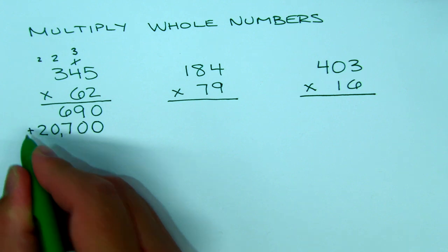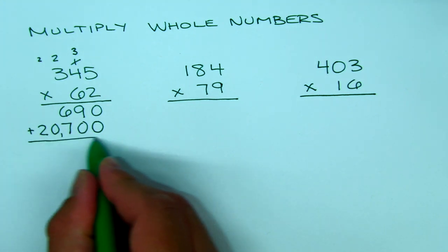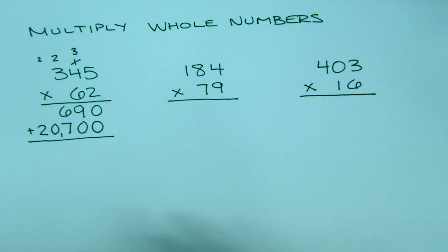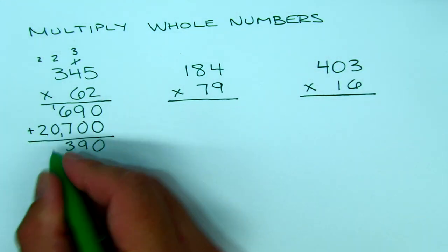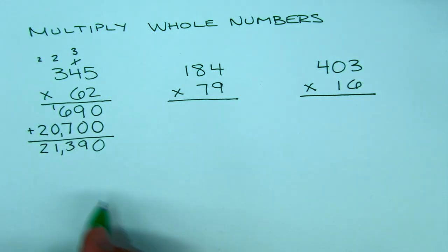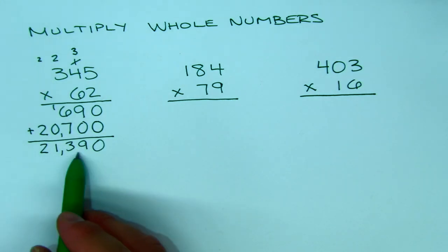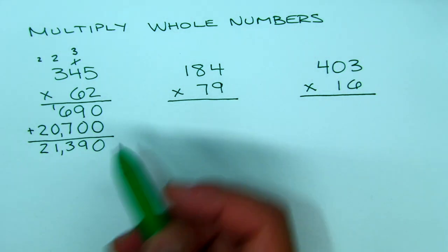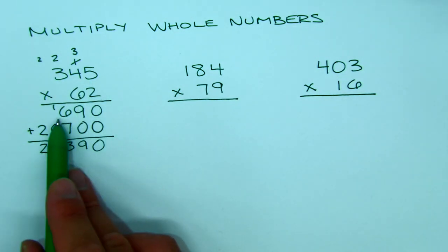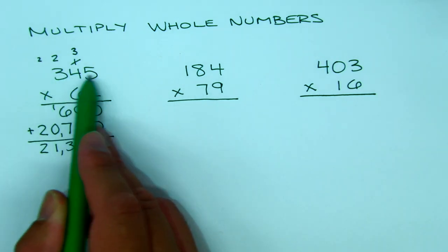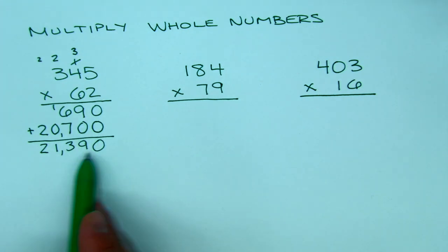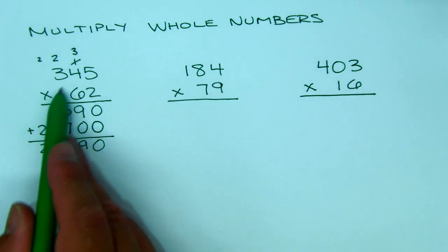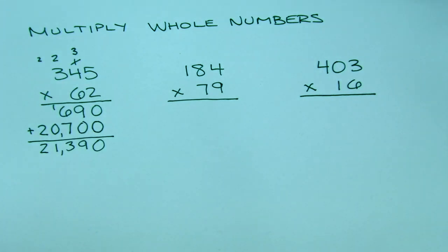So our second partial product is 20,700. Now all we have to do is add our two partial products back together — kind of like breaking apart Humpty Dumpty and then putting it back together again. 345 times 2 was 690, 345 times 60 was 20,700, and when we put it back together we get the entire product.